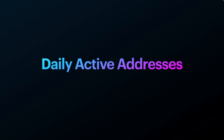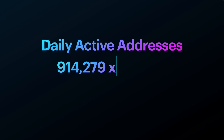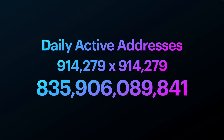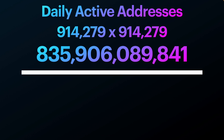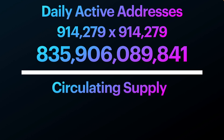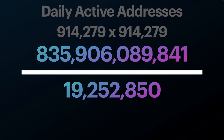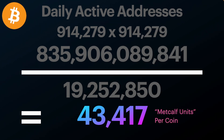Demand is important — everything comes down to supply and demand metrics. The daily active addresses are a very good way to understand how many users are using Bitcoin. There are about 914,279 of them. We need to square that number to be in line with Metcalfe's law, which gives us a value of about 836 billion. We then take the circulating supply and divide it into that number. Today Bitcoin's circulating supply is about 19.3 million, so dividing gives us a figure of 43,417 Metcalf units for Bitcoin.